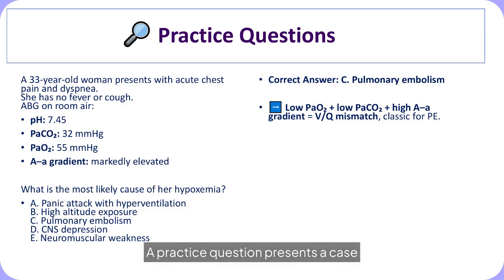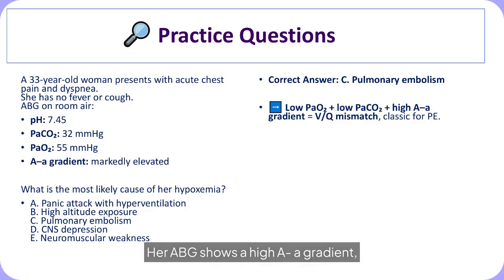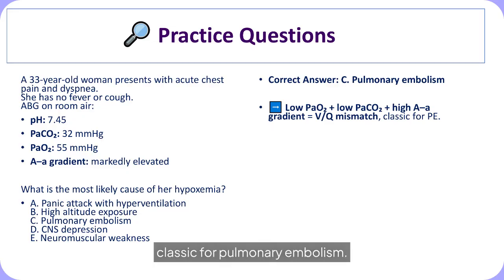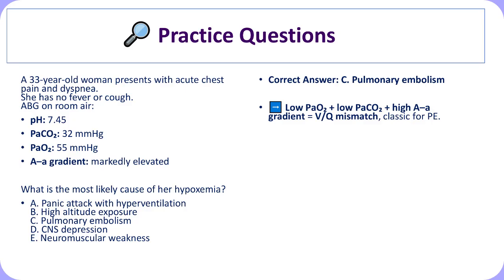A 33-year-old woman with acute chest pain and dyspnea has low arterial oxygen, low carbon dioxide, and a markedly elevated alveolar-arterial oxygen gradient, indicating impaired pulmonary gas exchange rather than a problem with ventilation or inspired oxygen. The combination of hypoxemia, respiratory alkalosis, and a widened alveolar-arterial oxygen gradient is characteristic of ventilation-perfusion mismatch, making pulmonary embolism the most likely diagnosis. This pattern reflects well-ventilated but poorly perfused lung regions, which prevents adequate oxygen transfer into the blood and produces the elevated gradient seen on arterial blood gas testing.